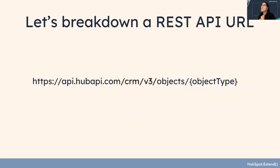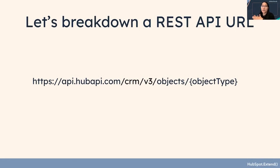Now let's break down a REST API URL. It's very important that when we're calling our API URLs, we understand how they're structured. If we understand the structure, we can start to understand how other APIs are structured too, making it easier to work with any APIs in general. Most APIs are structured similarly to how HubSpot does it.